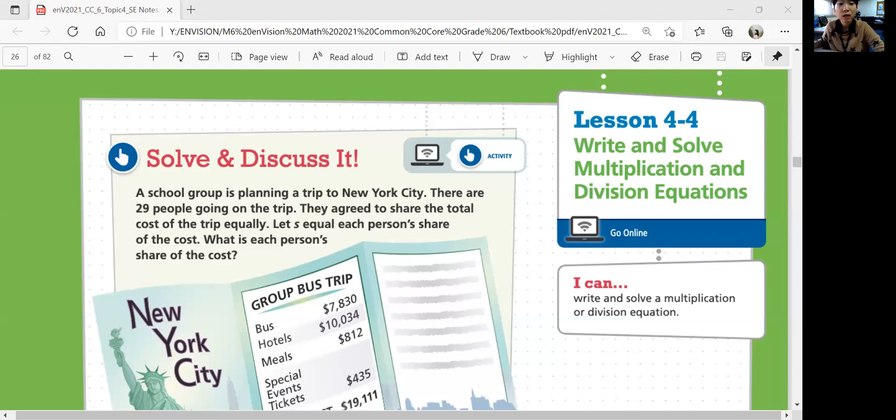Let's look at solve and discuss it. The school group is planning a trip to New York City. There are 29 people going on the trip. They agree to share the total cost of the trip equally. Let S be equal to each person's share of the cost. What is each person's share of the cost?